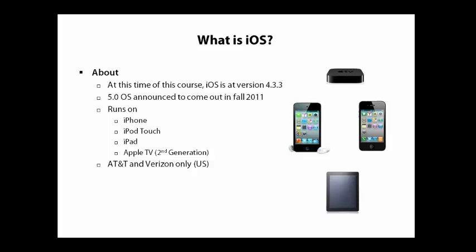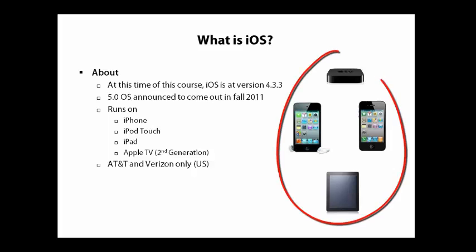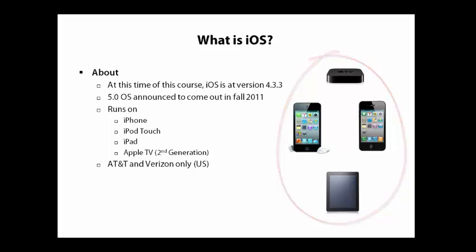iOS is currently at version 4.33. I just watched the developer conference where iOS 5.0 was announced, and it's supposed to come out fall 2011. It has some nice new features — something that Android did a little bit better on, the notifications, and they're adding that into the platform, along with wireless sync, which is really going to be nice. It runs on the iPhone, the iPod Touch, the iPad, and the second generation Apple TV. We haven't seen much with the Apple TV yet, but I think in the future we are going to. AT&T and Verizon are the official resellers for the iPhone in the U.S., though just today they announced you can buy an unlocked iPhone, but it's pretty cost prohibitive.